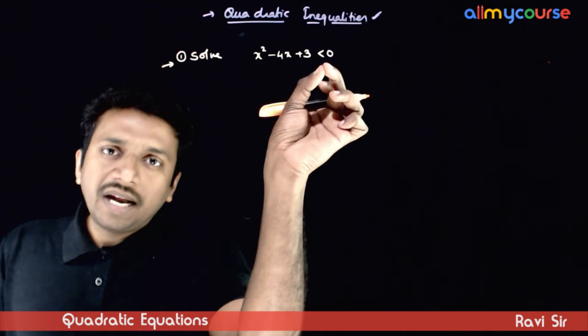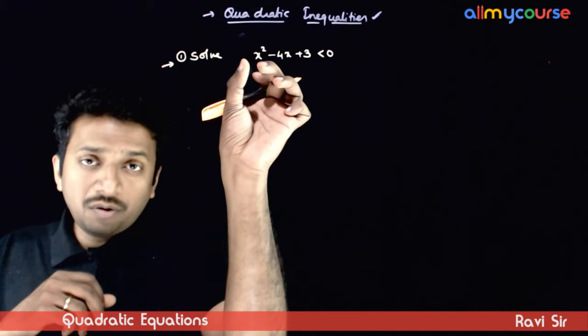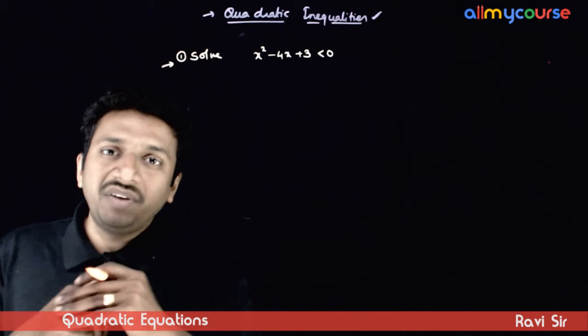An expression is negative implies the quadratic expression with leading coefficient positive is less than 0 implies x lies between the roots.